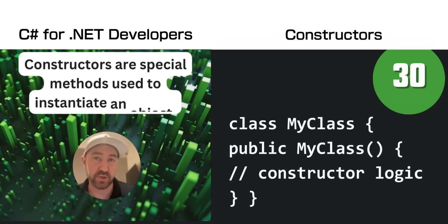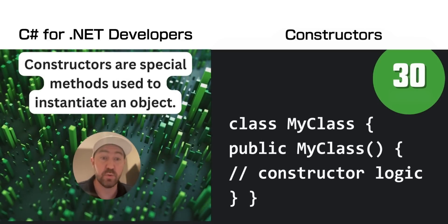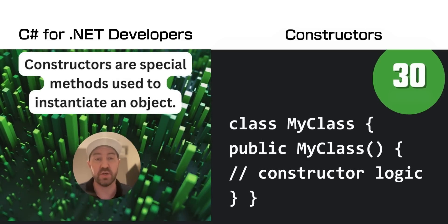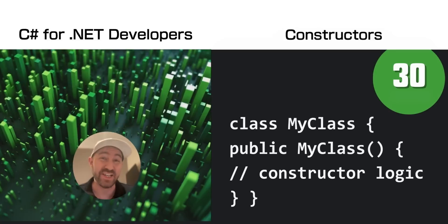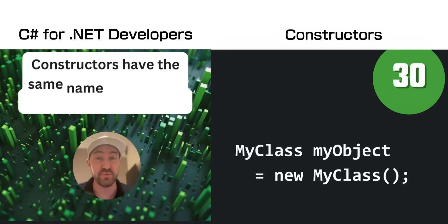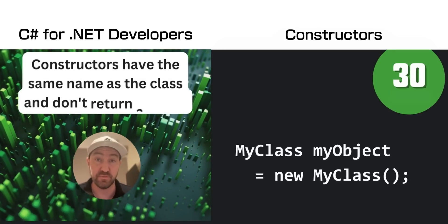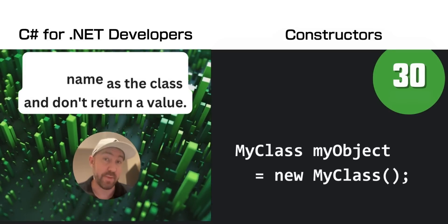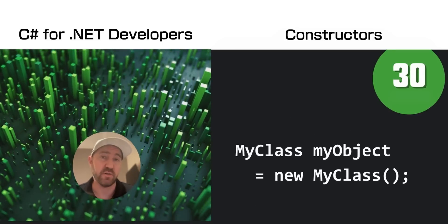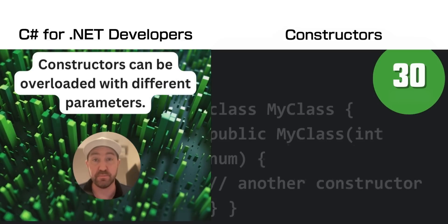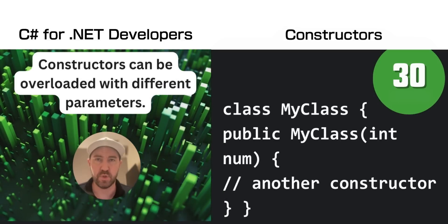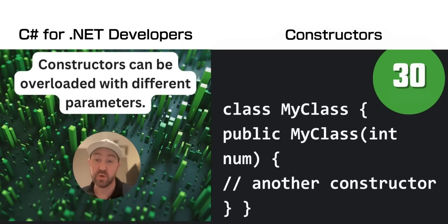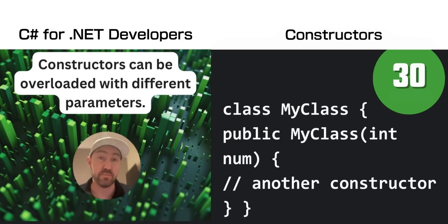Within an object or a class, you will find a constructor. A constructor is used to instantiate that object and is run first. The constructor in a class has the same name as the class itself and doesn't return a value. You can provide multiple constructors for your class, each with different parameters.